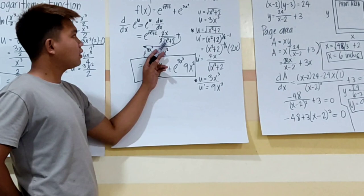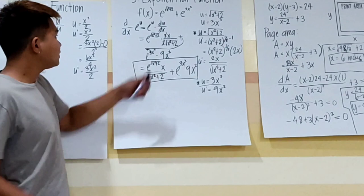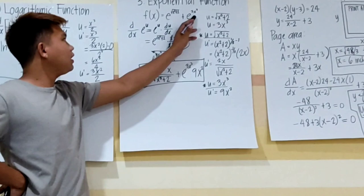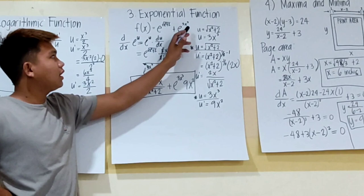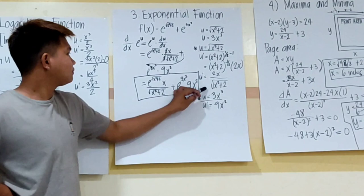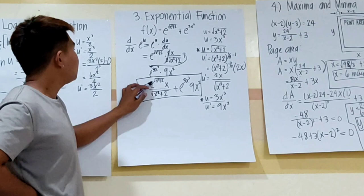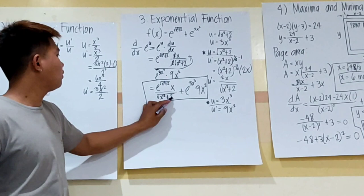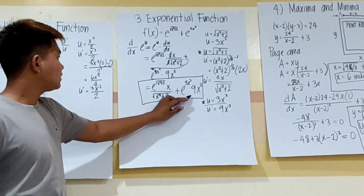The derivative of 2x is equal to 2, so we can cancel terms. Plus the other term: e raised to 3x³, and the derivative of 3x³ is 9x². So the final answer is e raised to the square root of (x² + 2), times x all over square root of (x² + 2), plus e raised to 3x³ times 9x².